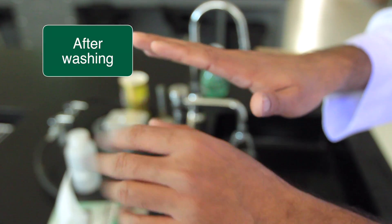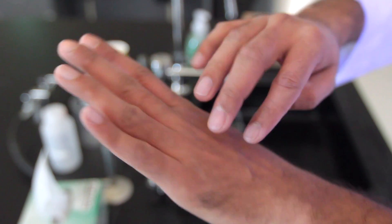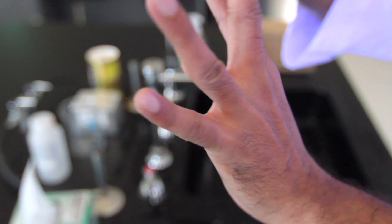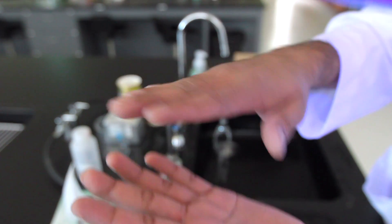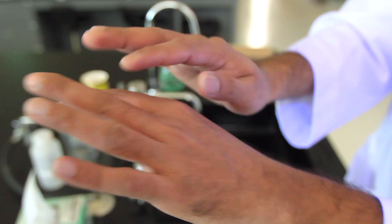After having washed our hands properly, you should not see the Glo Germ which was all over. I cannot see over here. I cannot see between the fingers and I cannot see around my nails. So that's an example of good hand washing.